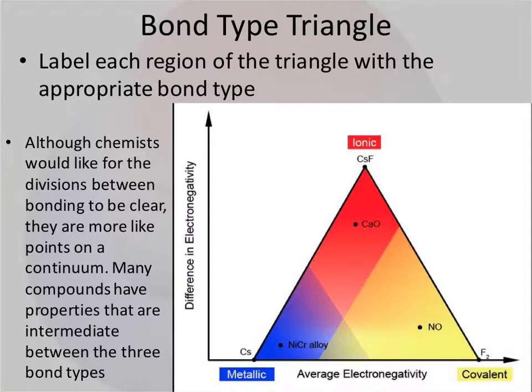You can see that there are a couple of elements and compounds that they have dictated as sort of the extremes for ionic and metallic and covalent bonding. But other than that, there's a lot of intermediate area in here where elements are going to fall in between.